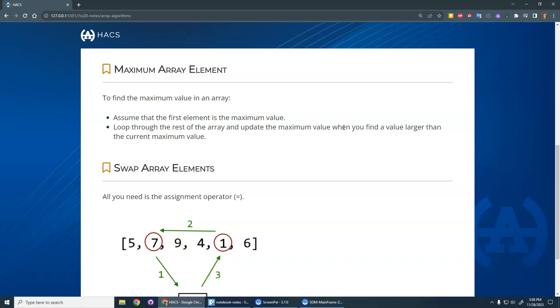And then we update the maximum value when you find a value larger than the current maximum. And then once you've gone through the entire array, your maximum value should be the largest one, right? Because you've updated it, you've compared it to each one.